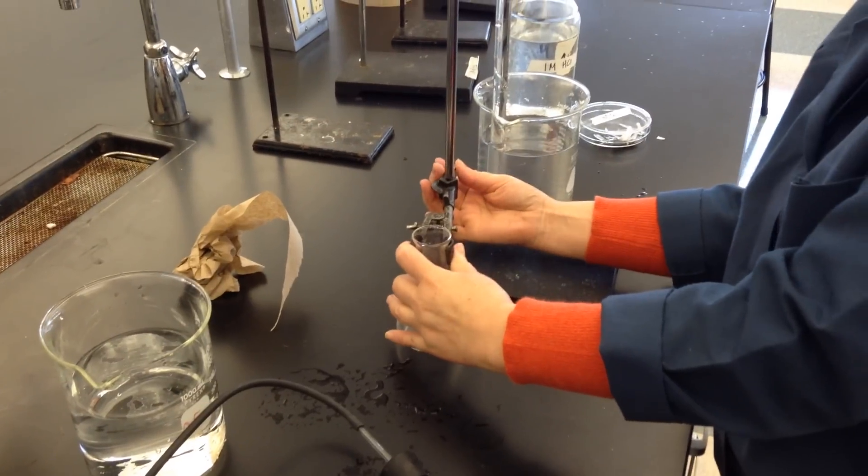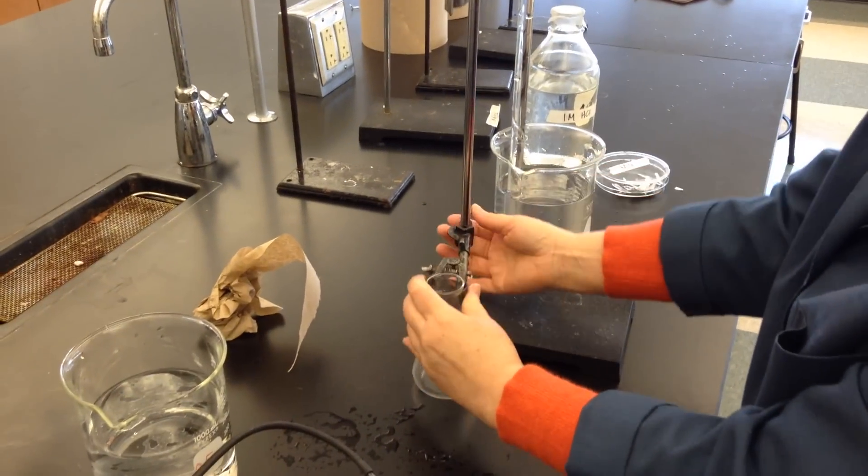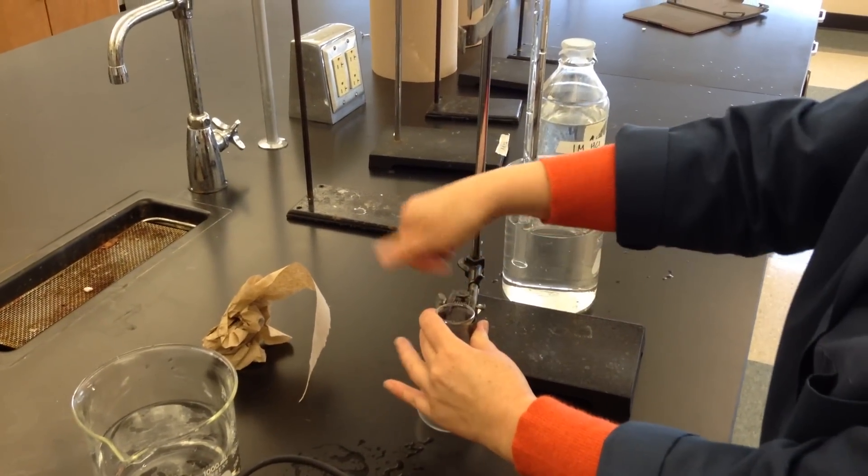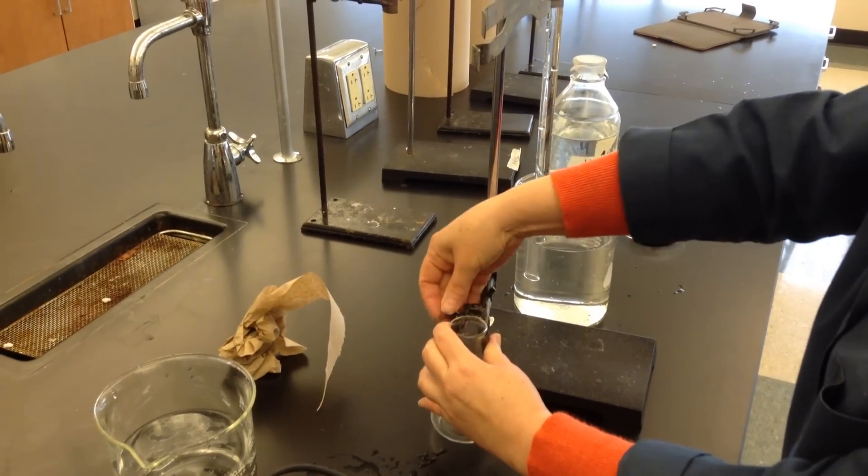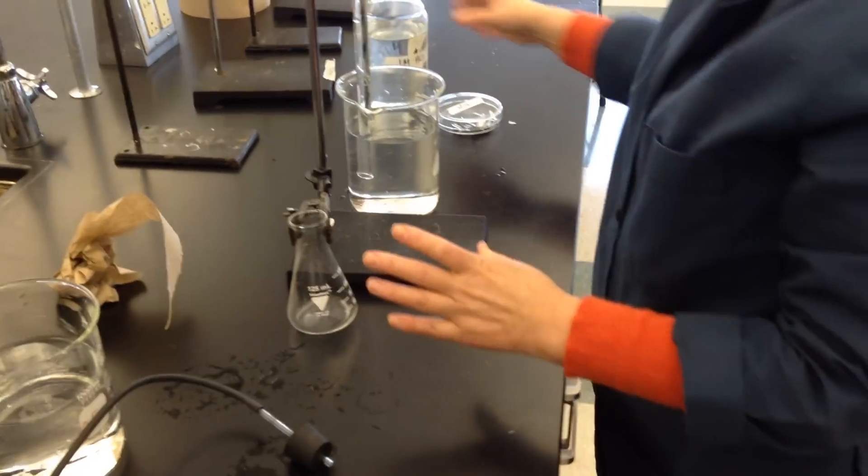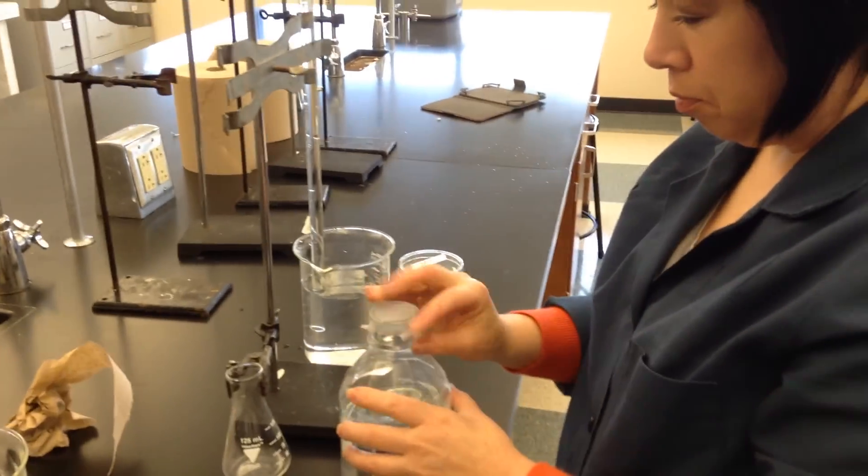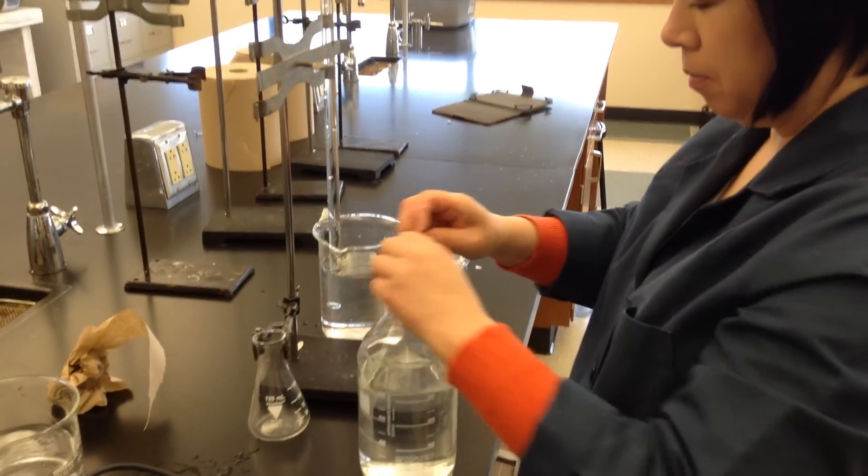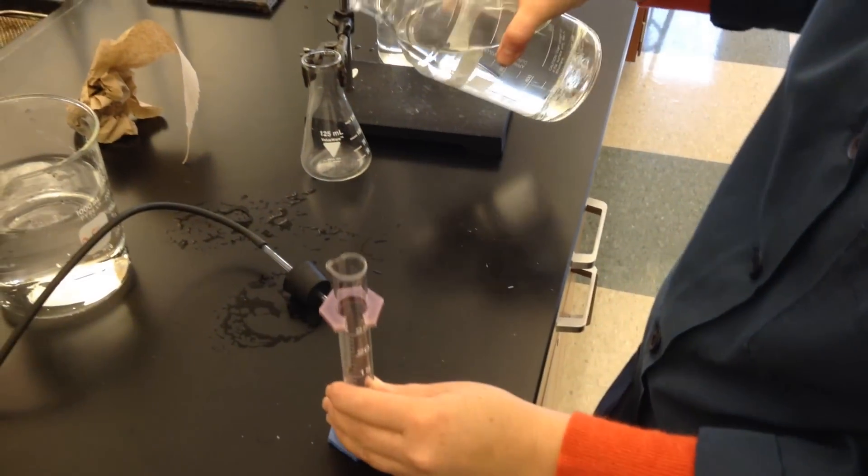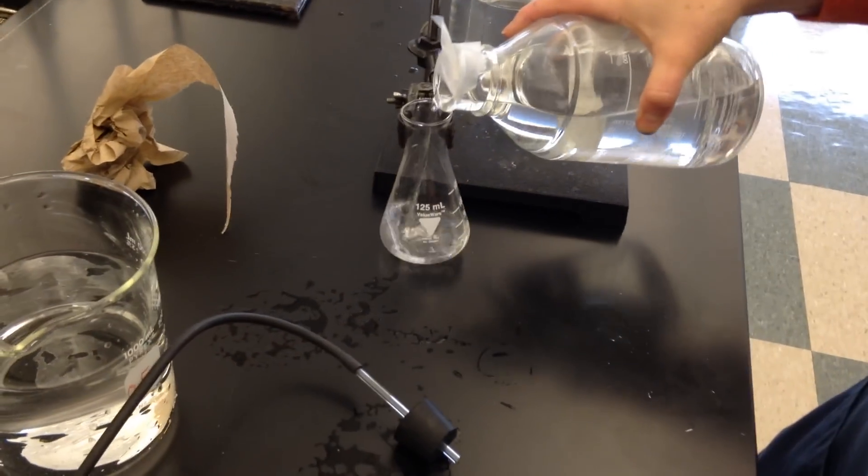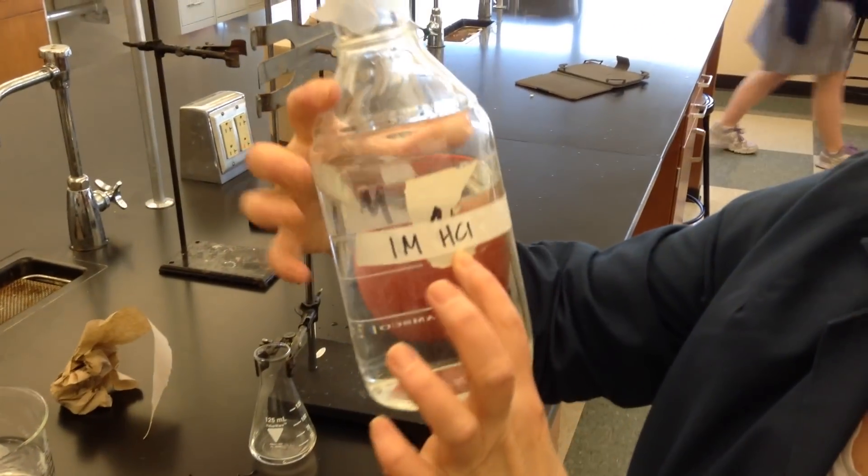And I'm going to do the acid and metal. So I'm going to put a certain volume of acid in here that I have carefully measured. This happens to be one molar hydrochloric acid.